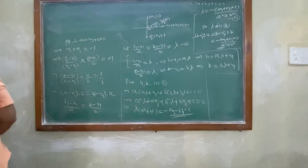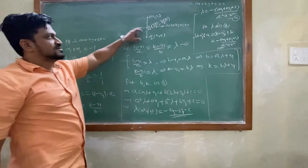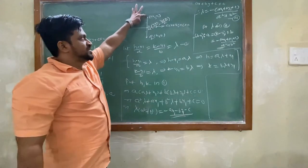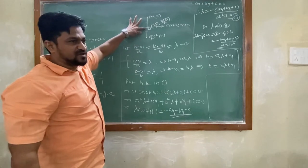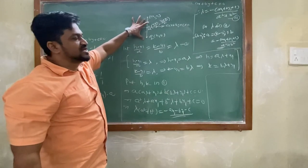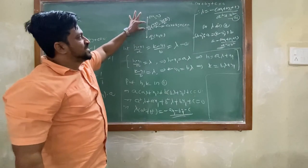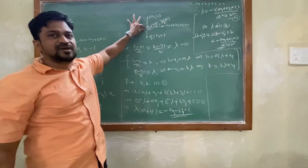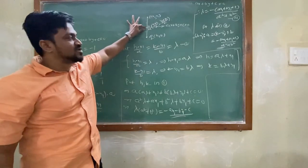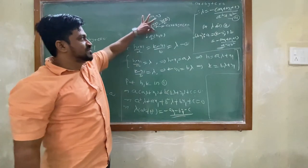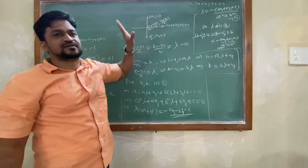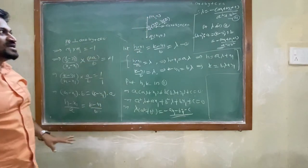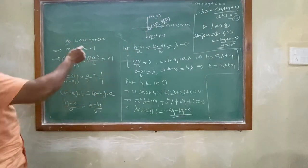Where we started: this is the image problem. Point P's image is Q. Previously it was foot of perpendicular; now it is image. Once we have P and Q, find M using the midpoint formula: first coordinates added divided by 2, second coordinates added divided by 2. Once we have midpoint M, M lies on the line.